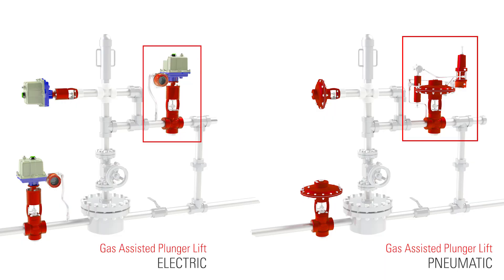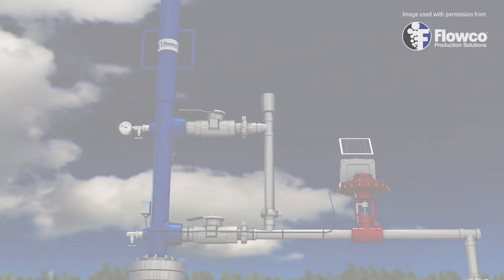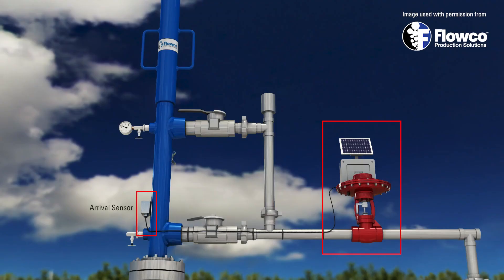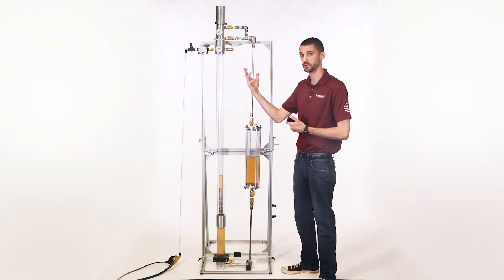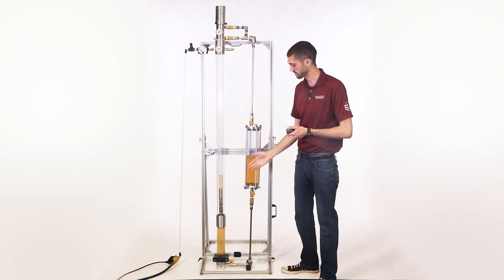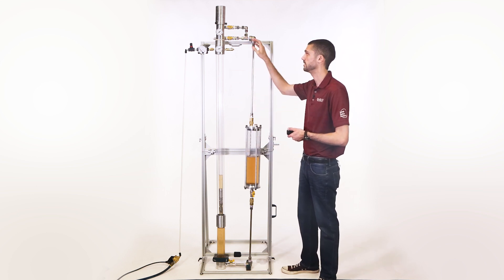If it's a pneumatic valve, they could still have electronics controlling it and determining when it's going to open just using a solenoid valve. But it could be looking at casing pressure. When casing pressure builds to a certain point, it's then going to open up the surface valve allowing that plunger to come to the surface with that column of fluid.